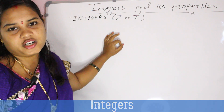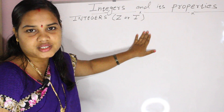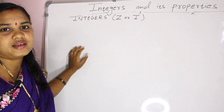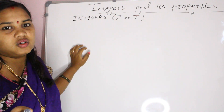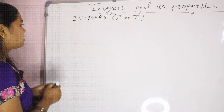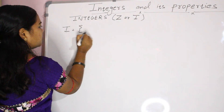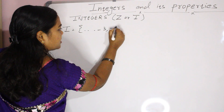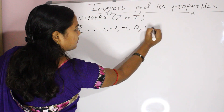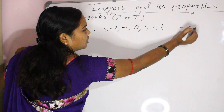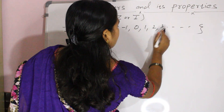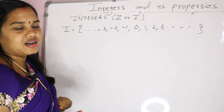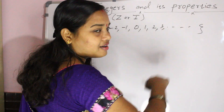Integer set is denoted by capital Z or capital I. Integer is a set of natural numbers — positive natural numbers, zero, and negative natural numbers. So integer set I is equal to: ...negative three, minus two, minus one, zero, one, two, three... There are infinite negative natural numbers on the left side and infinite positive natural numbers on the right side.